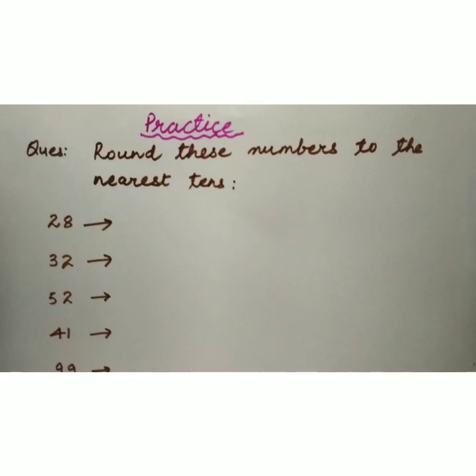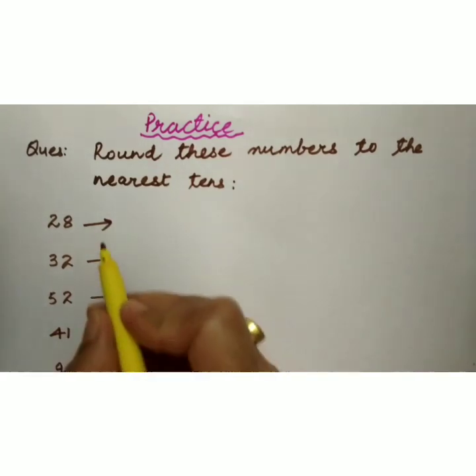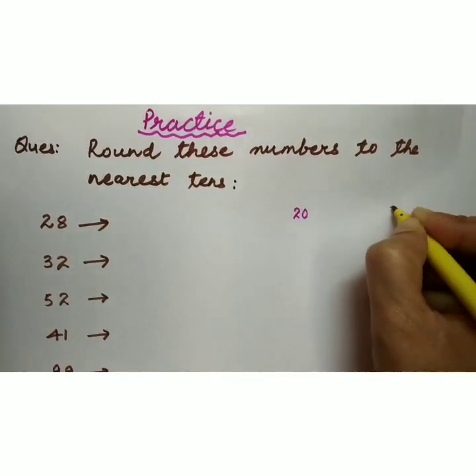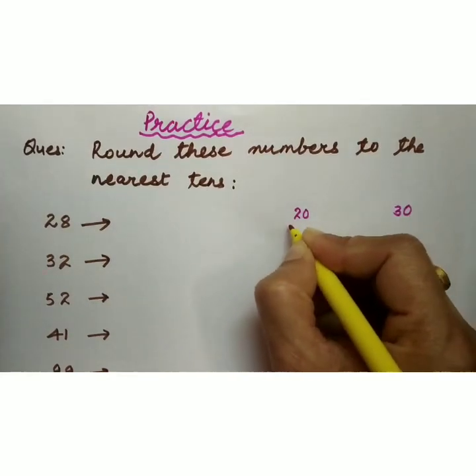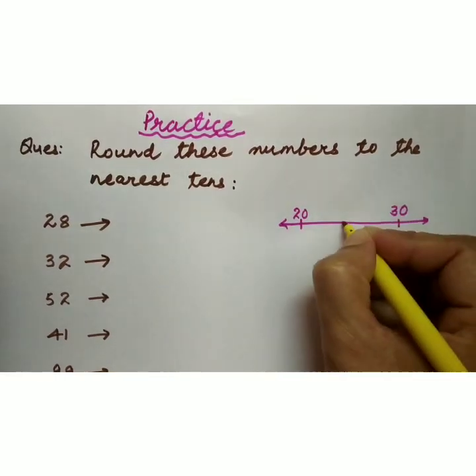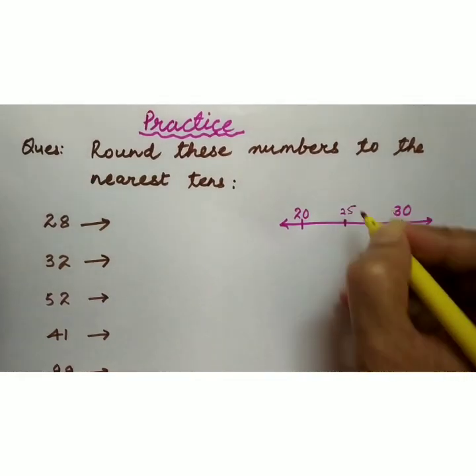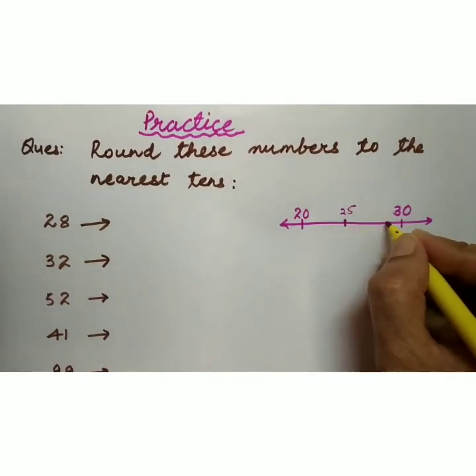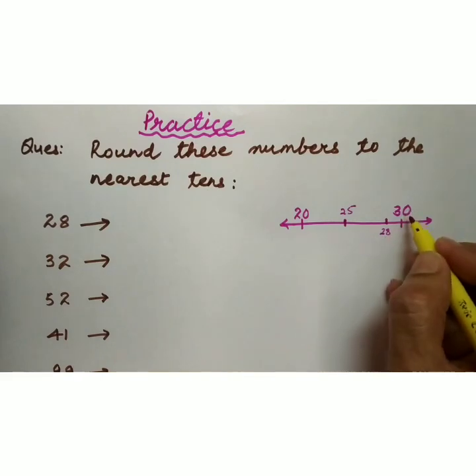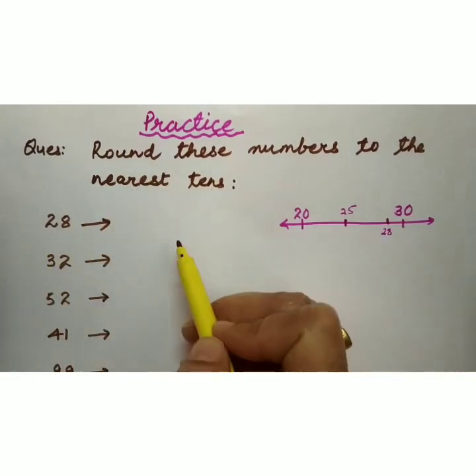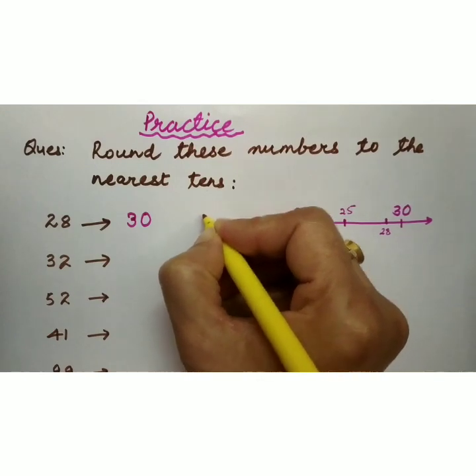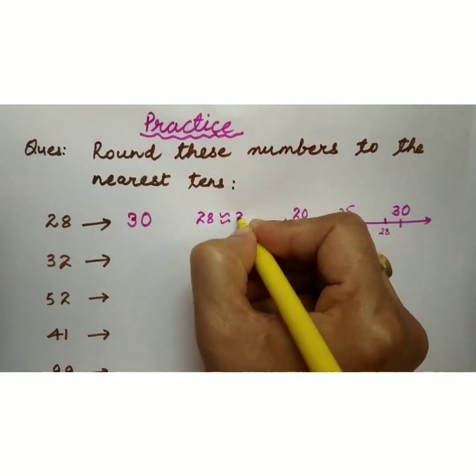Now let us do practice. Round these numbers to the nearest tens. So first we have 28. We will check 28. 28, 20 or 30 ke beech mein lie karta hai. Isko hum number line pe show karenge. 20 or 30 ke bilkul middle mein aayega 25. Or 25 ke right side jab hum move karenge, to yahan kahin pe aayega 28. It means 28 is closer to 30. Toh jab hum 28 ko nearest tens me round off karenge, toh iski value banegi 30. Approximate value of 28 is 30.